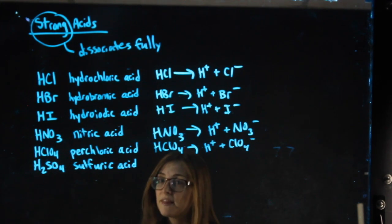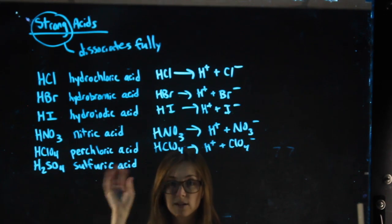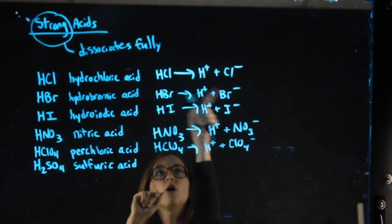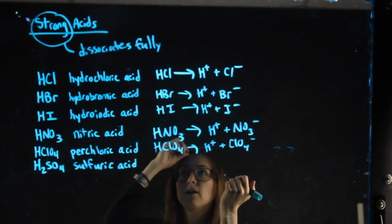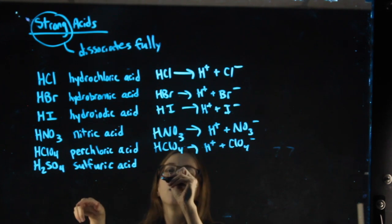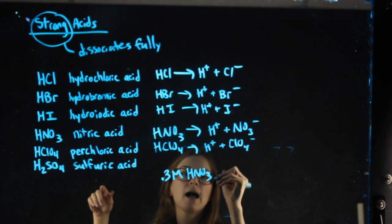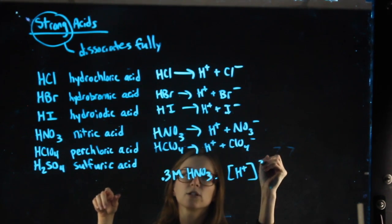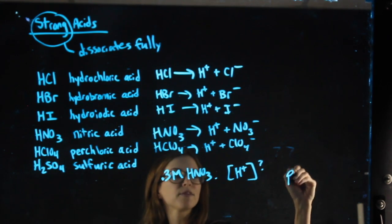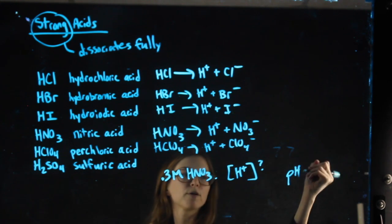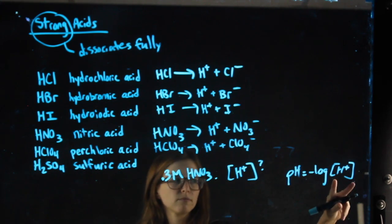Until we get to strong bases, then if you don't conceptually understand what I'm about to tell you, then you're going to be kind of stuck. So, because all the coefficients are one, that means if I had a molarity, a concentration of one of these acids. So let's say I had 0.3 molar nitric acid, and I wanted you to find the H+ concentration. Why might I want the H+ concentration? Well, if I want the pH, you know that for pH, we would need to take the negative log of my H+.